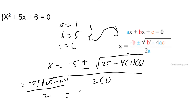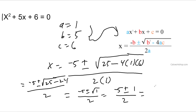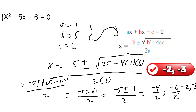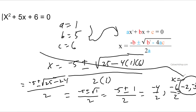That gives me negative 5 plus or minus the square root of 1, which is nice, over 2. Which is negative 5 plus or minus 1 all over 2. Negative 5 plus 1 is negative 4 over 2, and negative 5 minus 1 is negative 6 over 2, which gives you negative 2 and negative 3. That's what x is equal to. If you plug either back into the equation, you'll get zero.